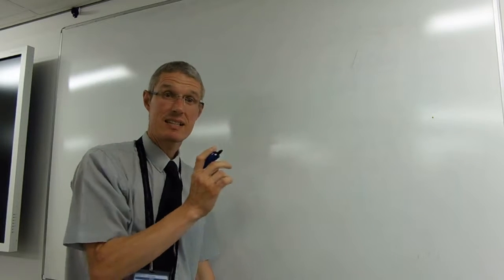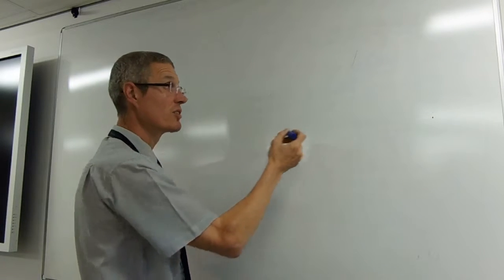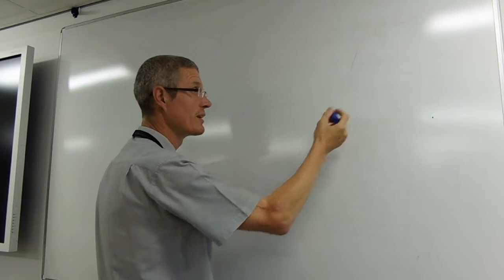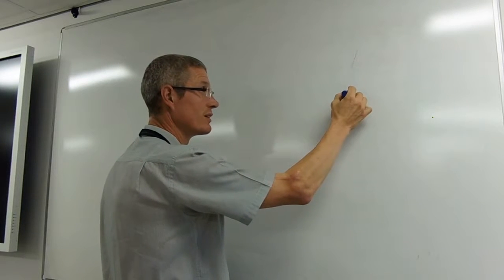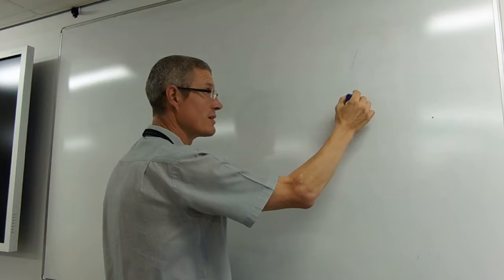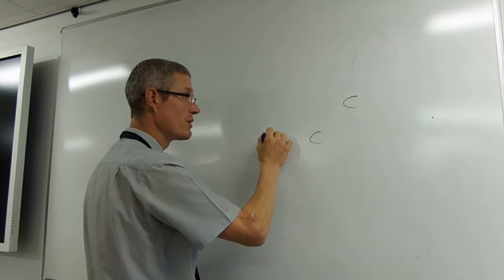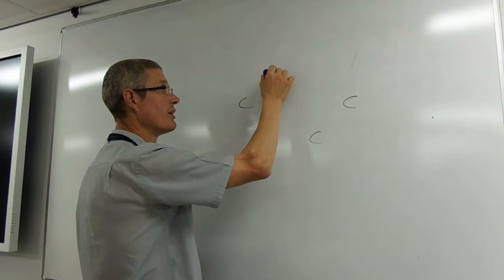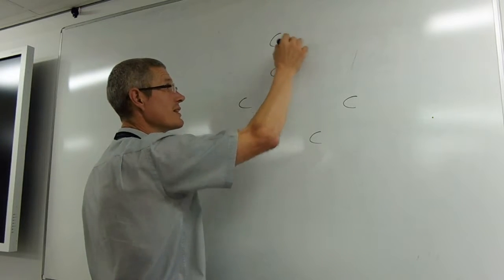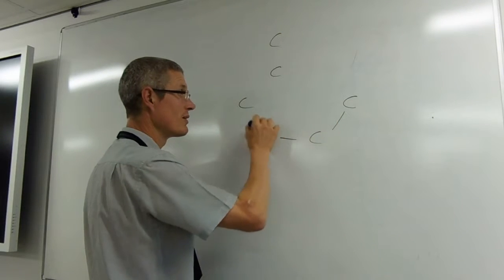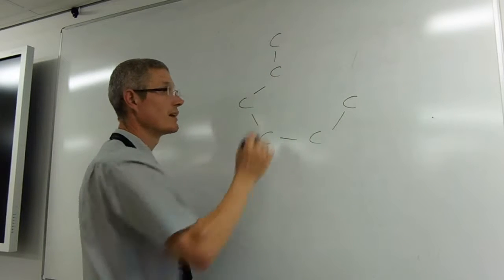Glucose is a six carbon sugar, a monosaccharide. So we're going to draw the ring form. One, two, three, four, five, six. That's the carbon chain.